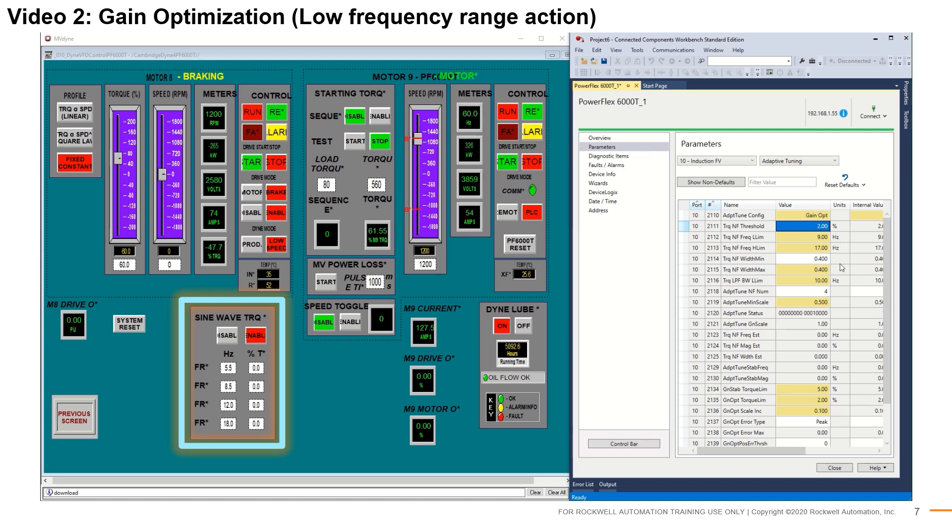Note that the moment adaptive tuning is enabled in gain optimization mode, the regulator gain scalar starts to increase. Its value can be observed using parameter number 2121 adaptive tuning gain scale. This scalar starts at the value of 1 and rises in increments set by parameter number 2136. The lower and upper bounds of this scaling factor can be configured using parameter number 2119 and 2141. For now, the upper limit is set to be 2 or 2 times the existing system bandwidth.